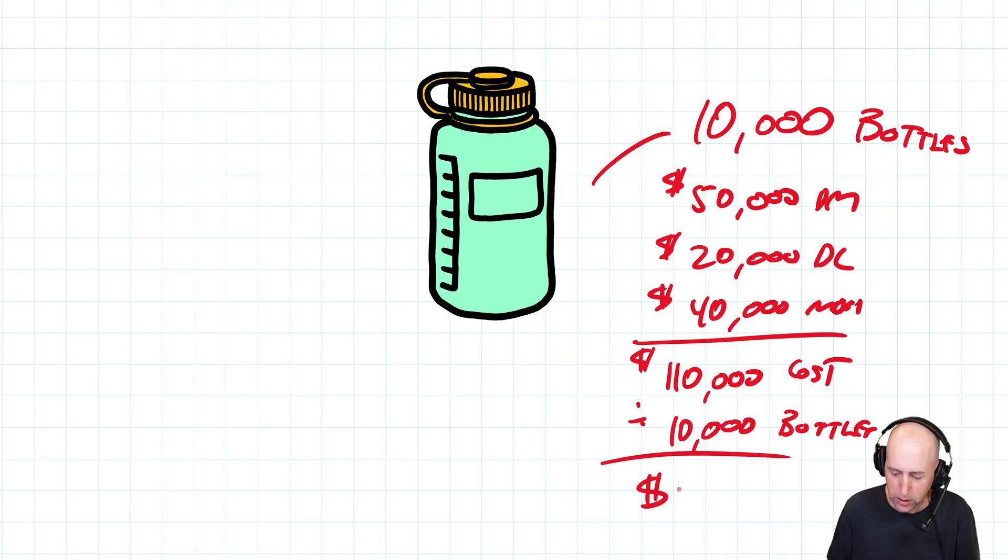My cost per bottle is $11 per unit, right? $11 per bottle. And that's how process costing works. And you can see how time saving it is.